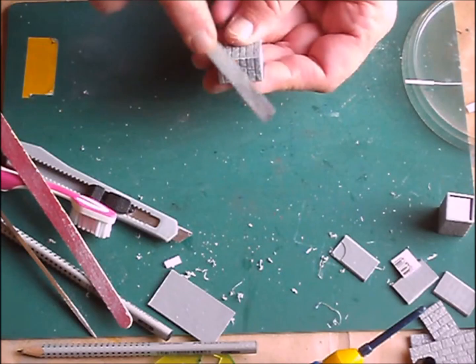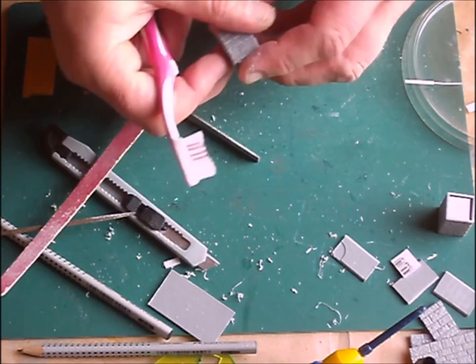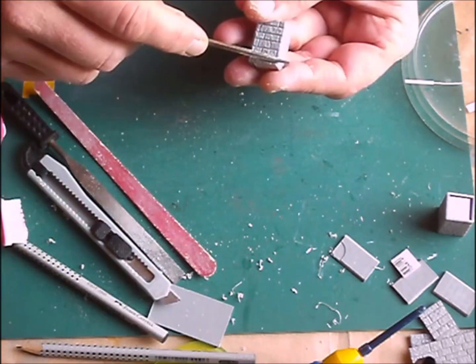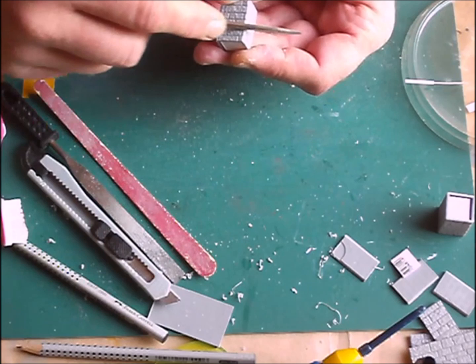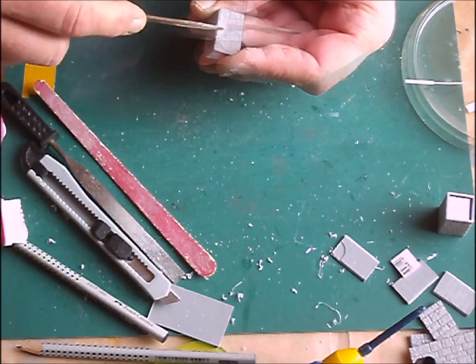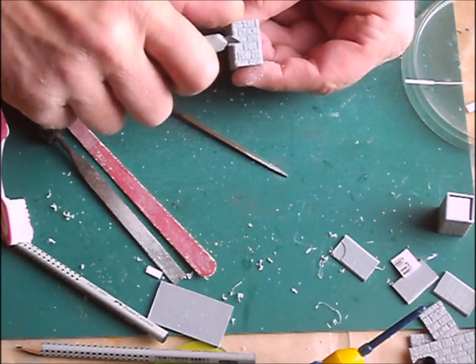I filed all corners to a slightly rounded shape. Then I used a small rectangular file to rework the joints on the corners. I scraped off the edges and sanded everything smooth.